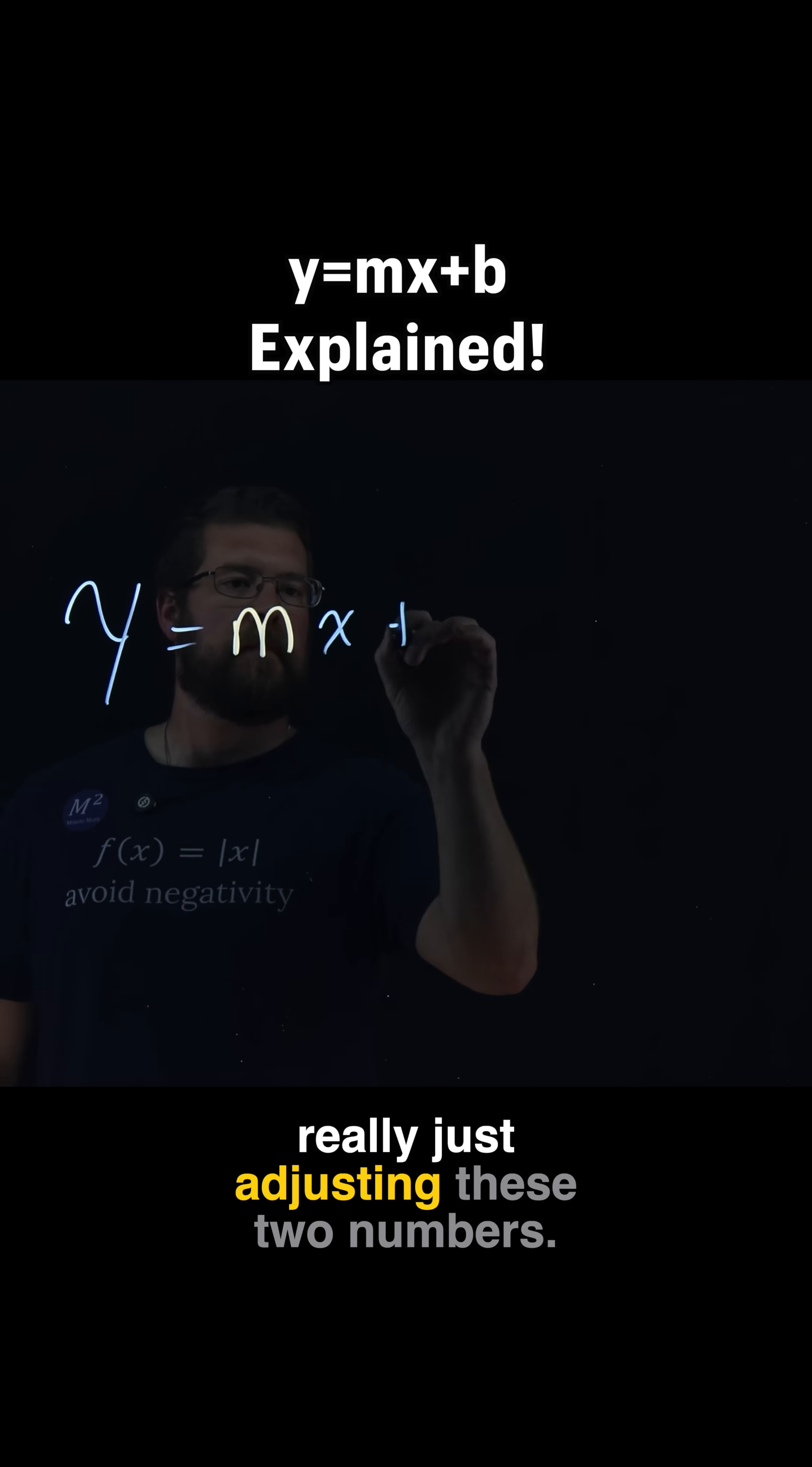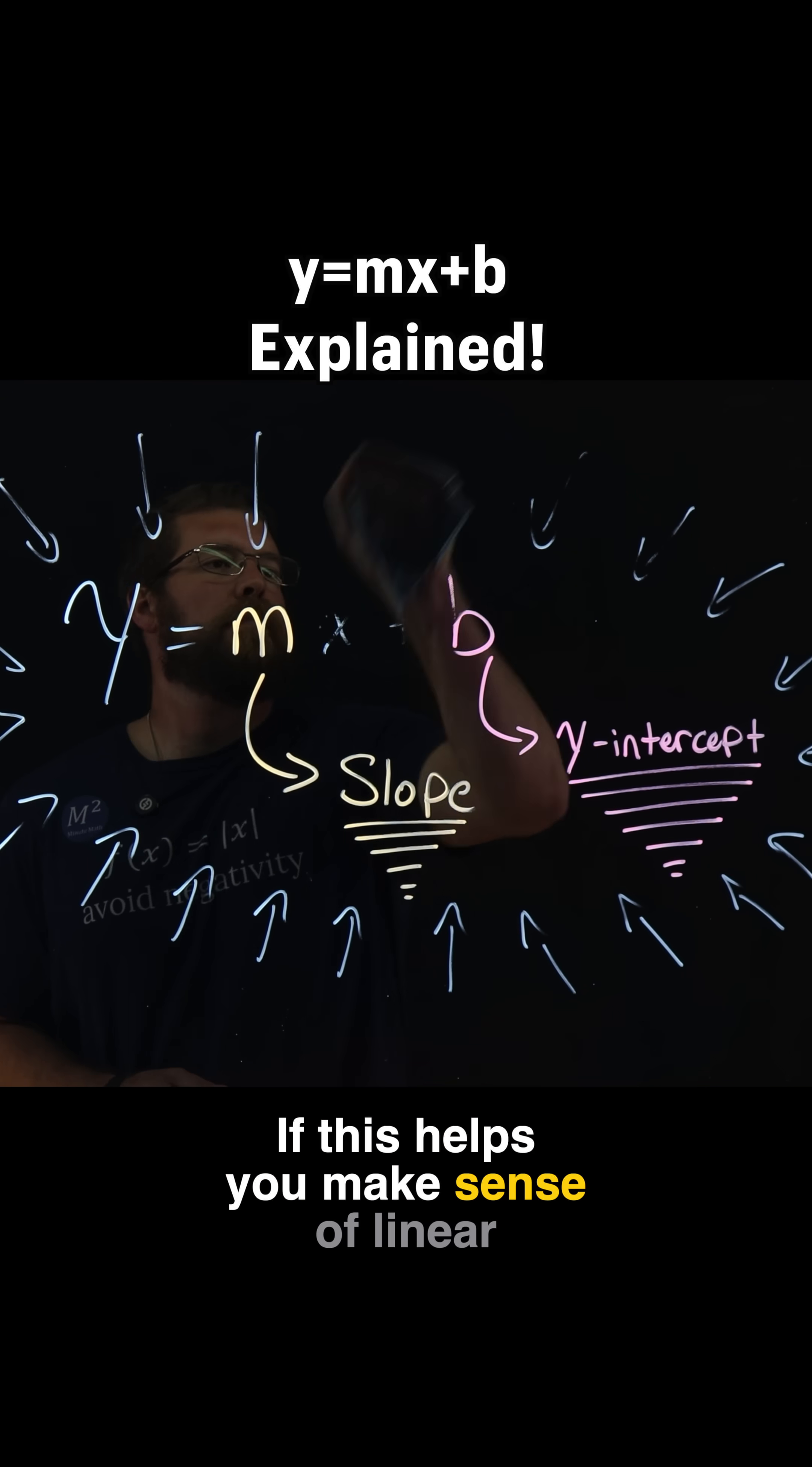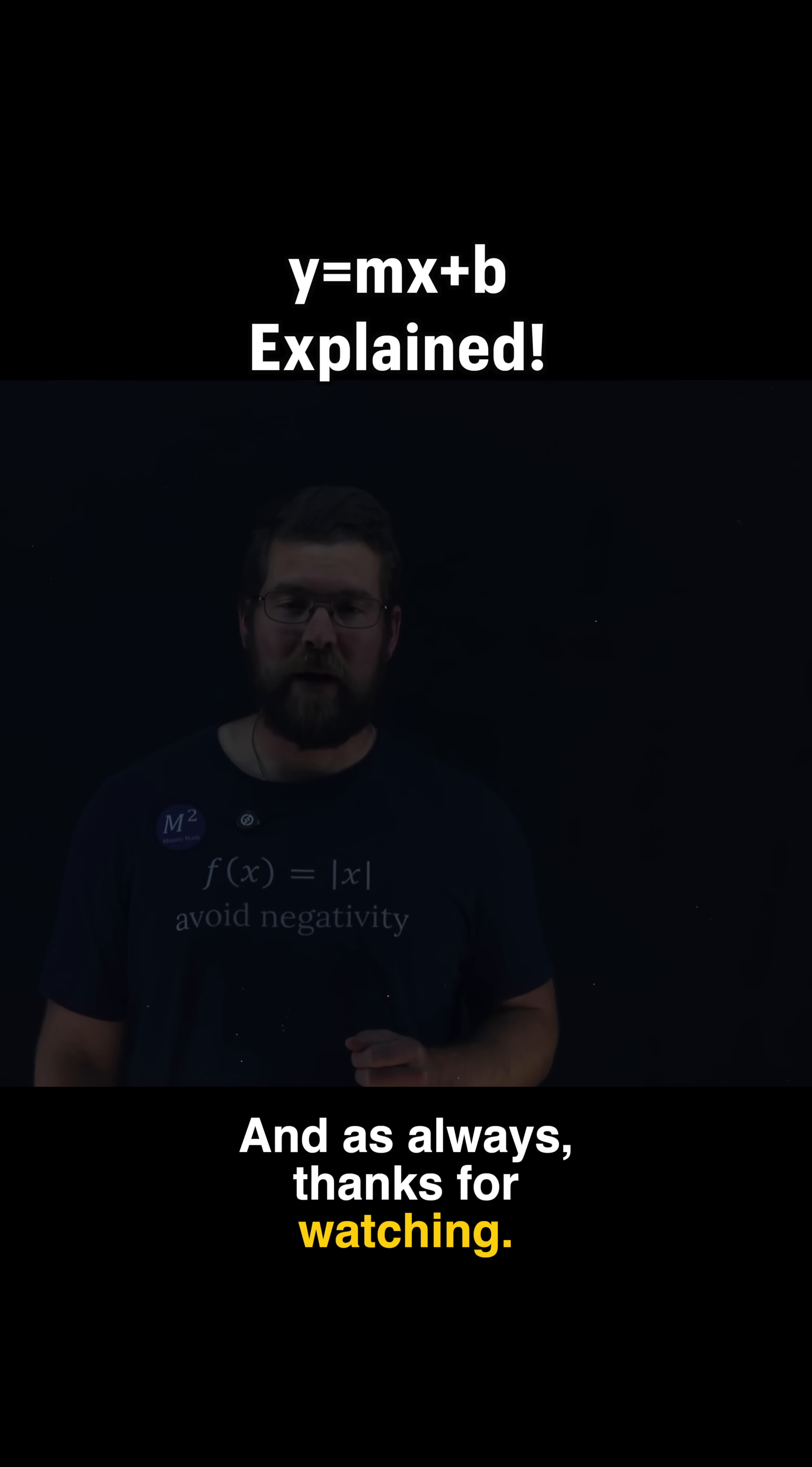So, whenever you graph a line, you're really just adjusting these two numbers, slope and intercept. That's the magic of y equals mx plus b. If this helps you make sense of linear equations, hit the subscribe button and like this video. And as always, thanks for watching. I'll see you next time.